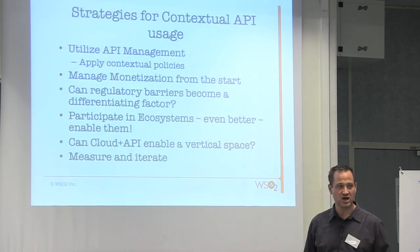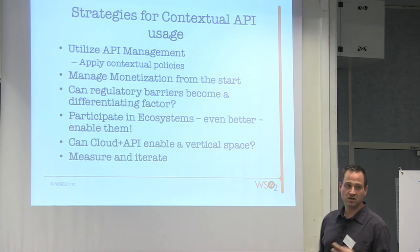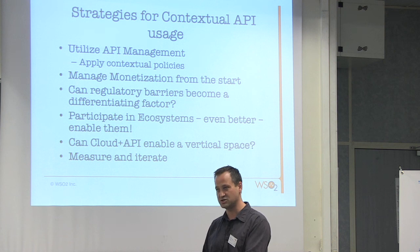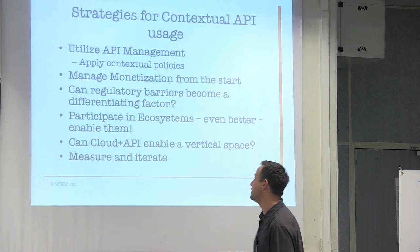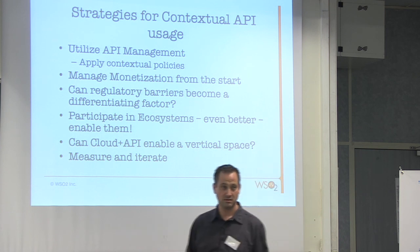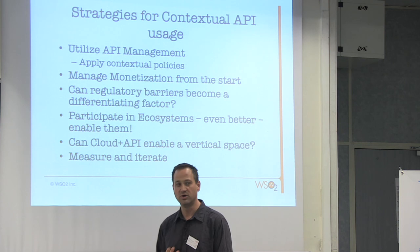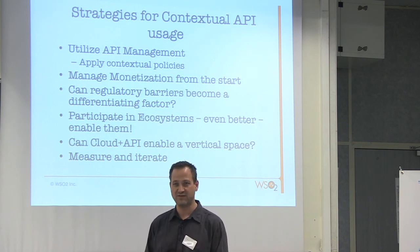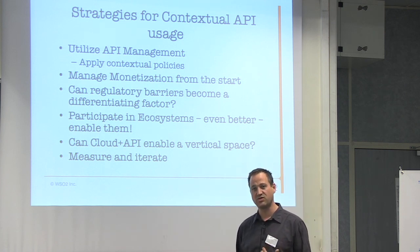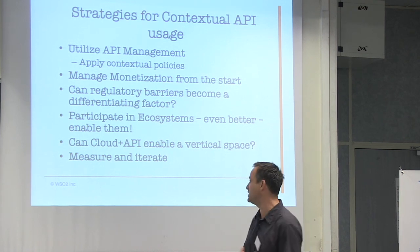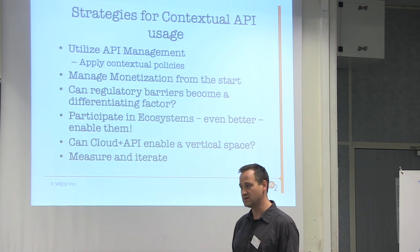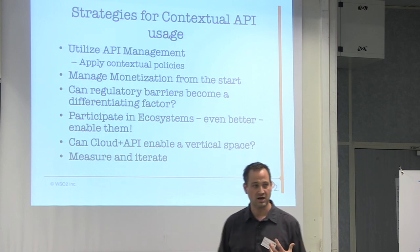My strategies for contextual API usage: first, you can't do this without some kind of manager — you need to control and manage API usage because a lot of contextual hook points come there. Think about monetization and manage that from the start. Think about regulatory barriers — they might be a barrier to everyone else, but if you can open them up, that can be a differentiating factor, just like Betfair has done. Participate in ecosystems, but also think about enabling those ecosystems. Think about how cloud can change the context in which APIs are offered to create different business models. And, of course, measure and iterate.